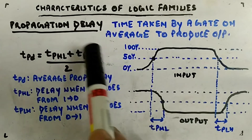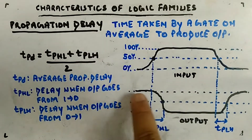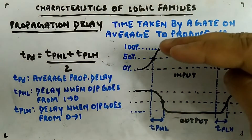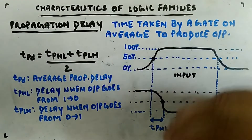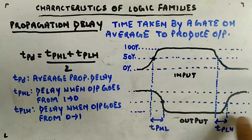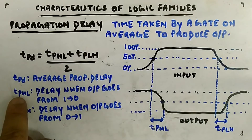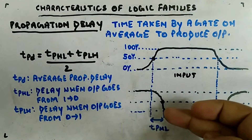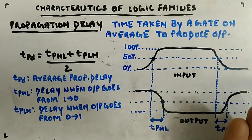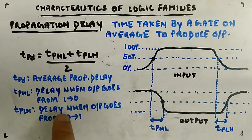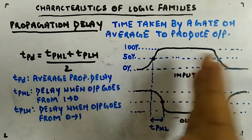To calculate TPHL and TPLH, we look at the input and output curves. The levels are marked at 0%, 50%, and 100%. For TPHL: start the timer at the 50% point of the input transition, and stop when the output reaches 50% during its high-to-low transition. The time difference between these two 50% points is TPHL — that is the standard measurement method.